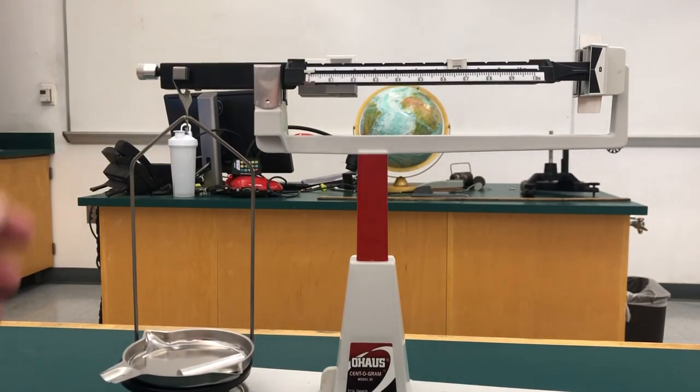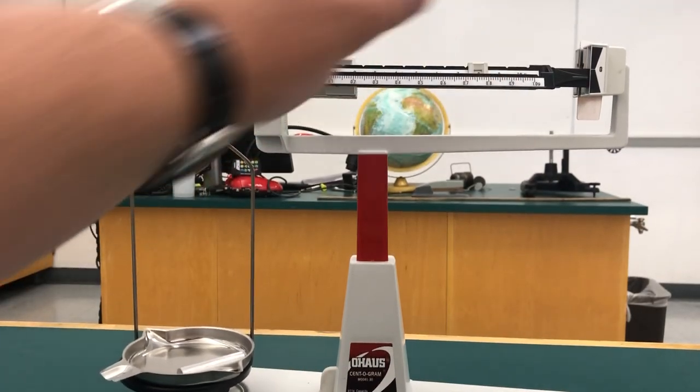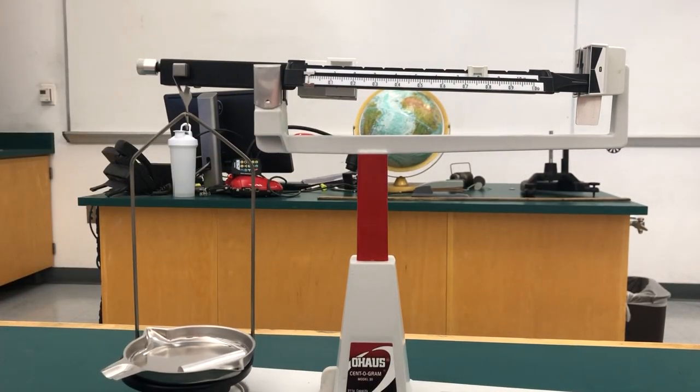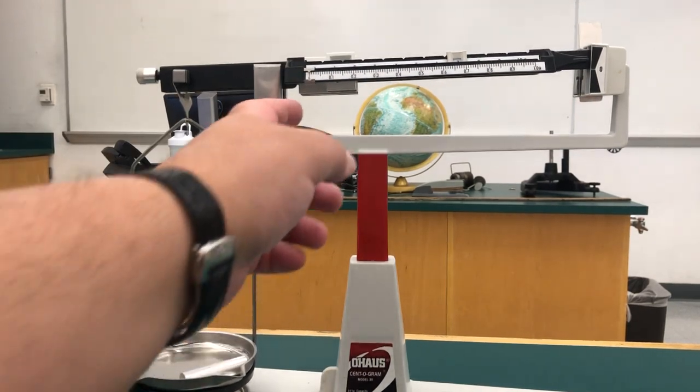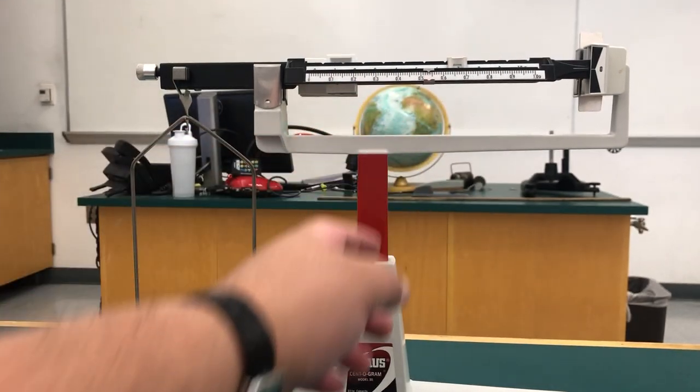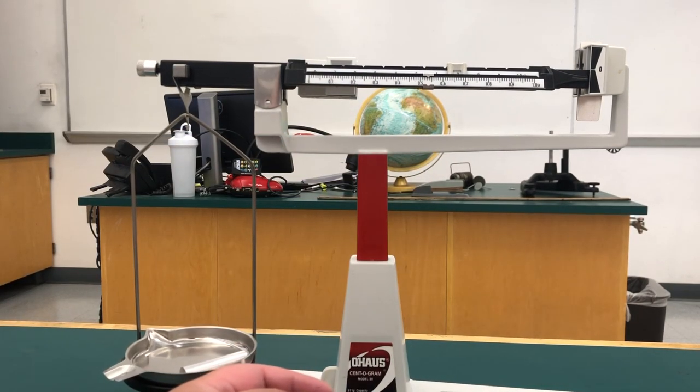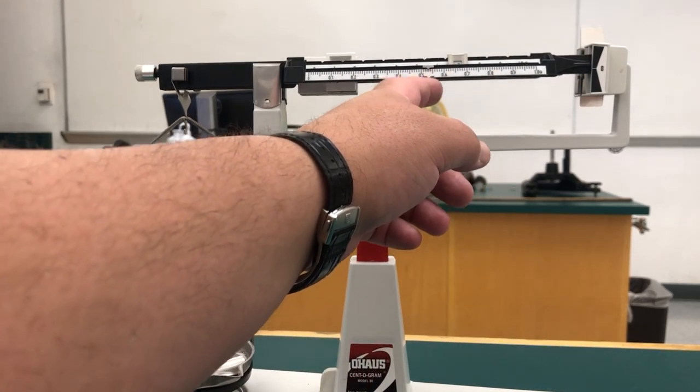Seven is too small. Eight is too much. Go back to seven. Now using the lowest, smallest scale, let's find the fraction of a gram so that the balance is balanced.